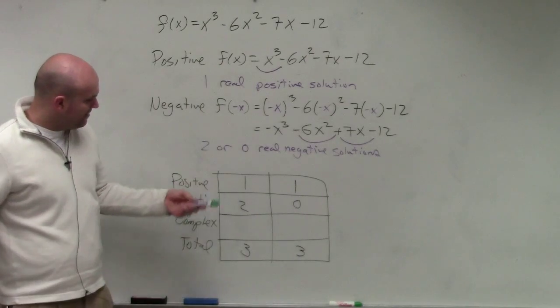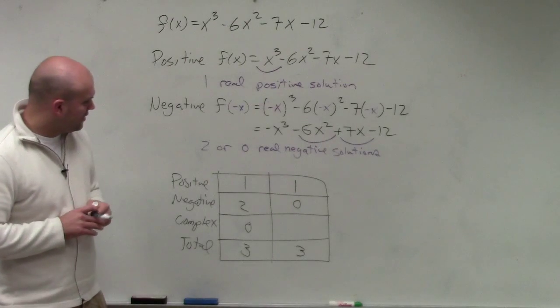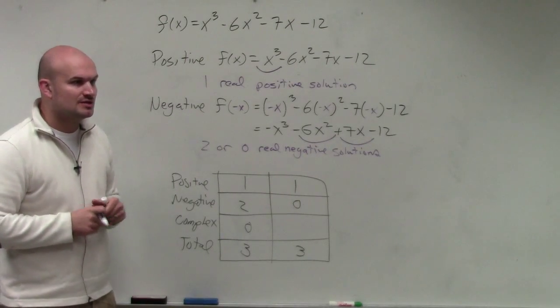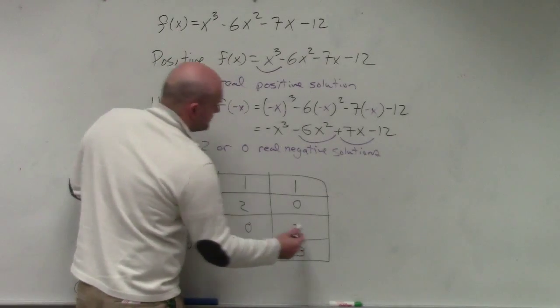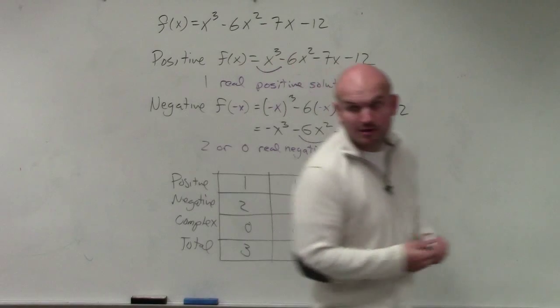Well, if I have 1 positive, 2 negative, how many complex do I have to have? 0. If I have 1 positive, 0 negative, how many complex do I need to have to have a total of three solutions? 2. So the total number of complex solutions is 2 or 0. Yes?